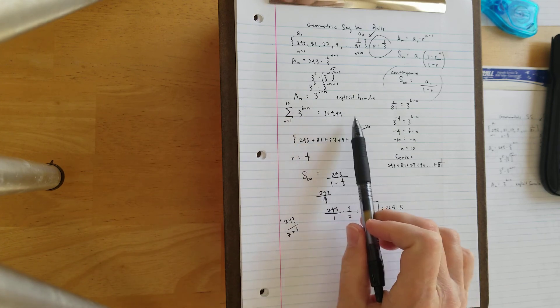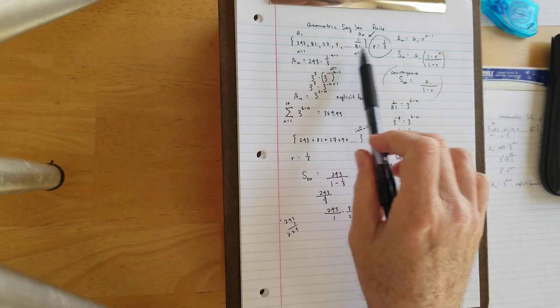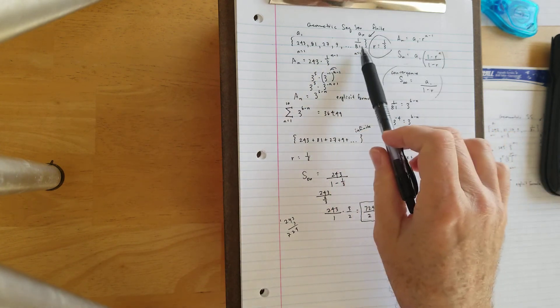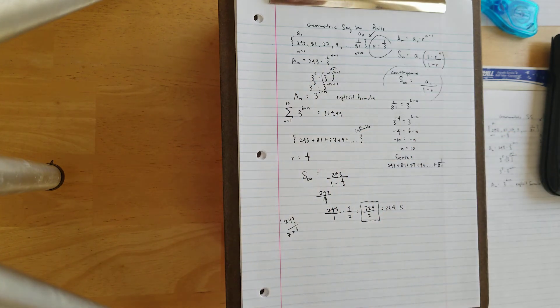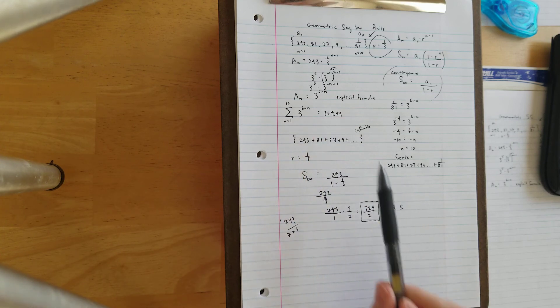As we continue adding values, even if we go past 1 over 81, as we continue adding values to this series, we're going to get closer and closer and closer to this 364.5.